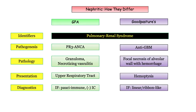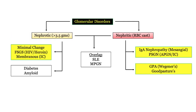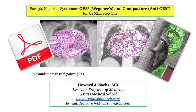That covers the full damage report: identifiers, pathogenesis, pathology, presentation, and diagnostics — information you need at the ready on test day. We've now covered the key nephritic and nephrotic disorders. In subsequent videos we'll finish the topic including a question-based presentation to ensure you grasp the key learning objectives. If you have any questions about the material, please contact us at 12 Days. Thank you.